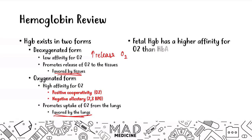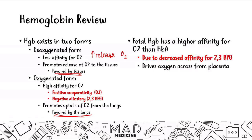Fetal hemoglobin is going to have a higher affinity for oxygen because it has a decreased affinity for 2,3-BPG. It's going to drive more oxygen across the placenta, and therefore it just needs to have a higher affinity in order for the fetus to get the right amount of oxygen it needs. Keep in mind, the lungs in the fetus are going to be underdeveloped up until the very end, so the main way they can get oxygen into their body is through the fetal hemoglobin molecules themselves.